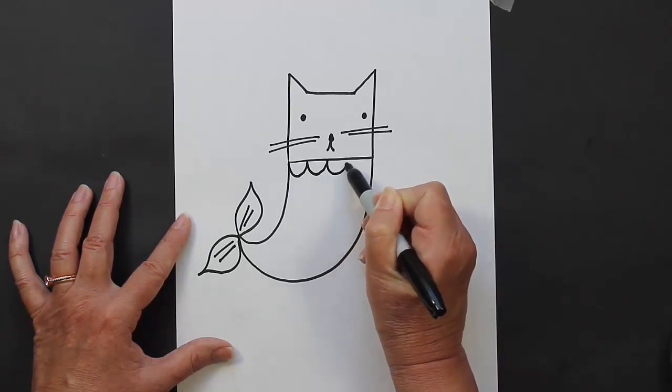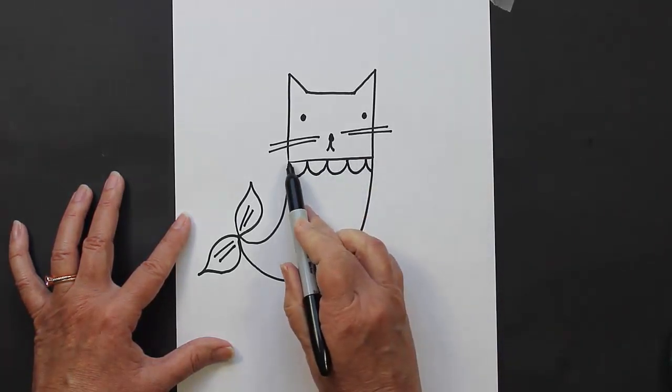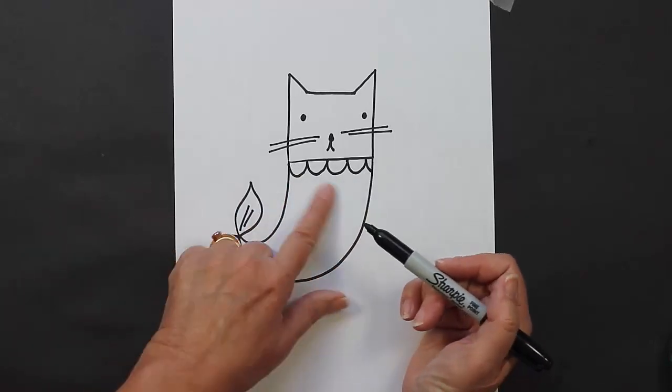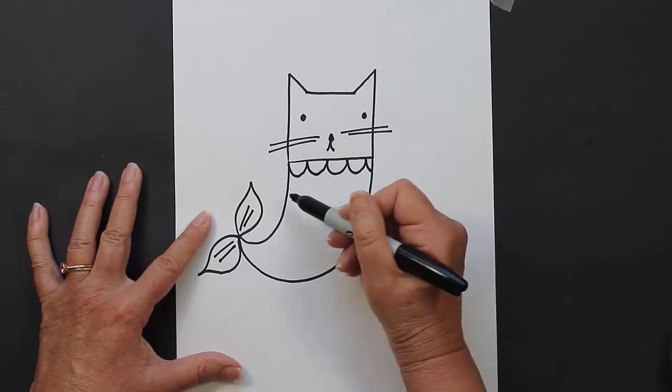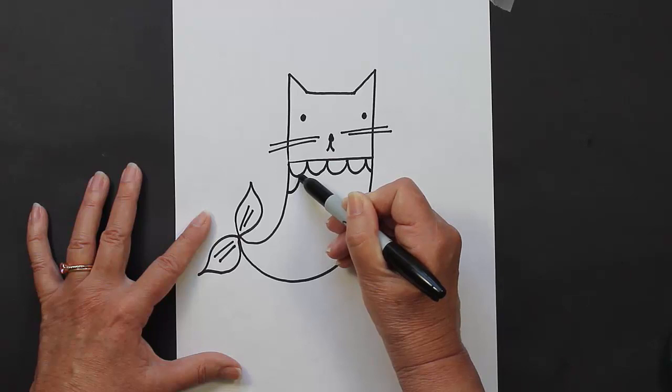Now inside the actual mermaid tail, what we're going to do is make a series of U's going all the way across the bottom of our initial line - and those are going to be the scales. And then what we're going to do is move down a little bit and make more curved lines.